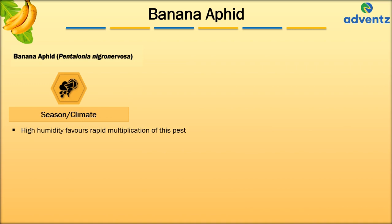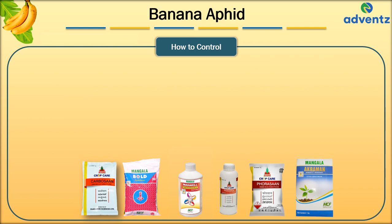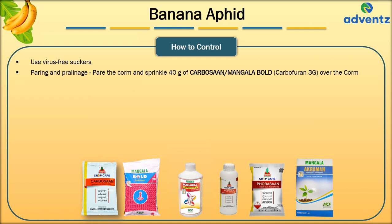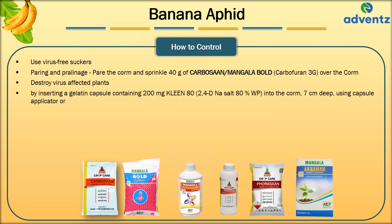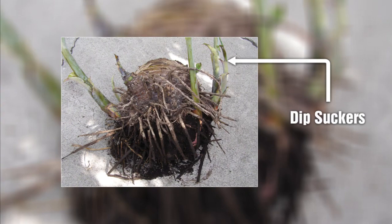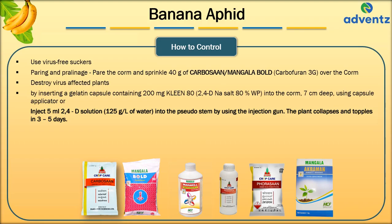To control Banana Aphid, use virus-free suckers, paring and prolinage. Pare the corm and sprinkle 40 grams of Carbosan or Mangala Gold (Carbofuran 3G) over the corm; before sprinkling, the corm should be dipped in mud slurry. Destroy virus-affected plants by inserting a gelatin capsule containing 200 mg of Clean 80, which is 2,4-D sodium salt 80% WP, into the corm 7 cm deep using a capsule applicator, or inject 5 ml of 2,4-D solution (125 grams per litre of water) into the pseudostem by injection gun. The plant collapses and topples in 3–5 days.